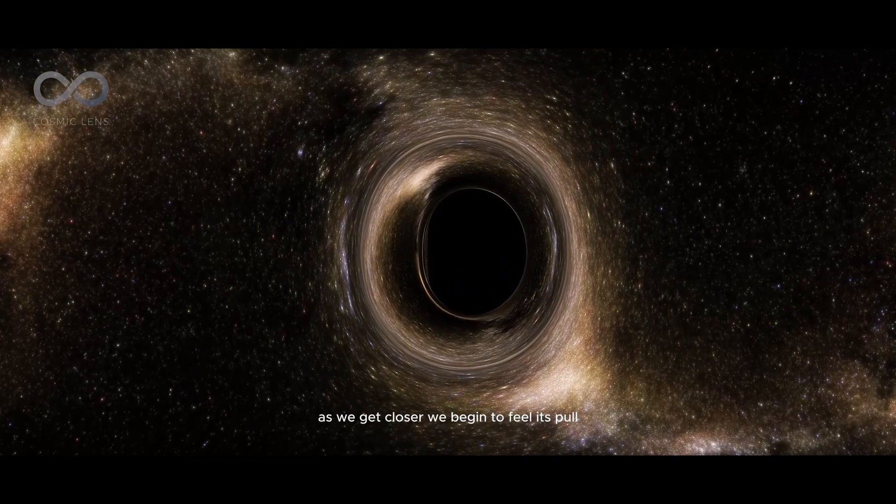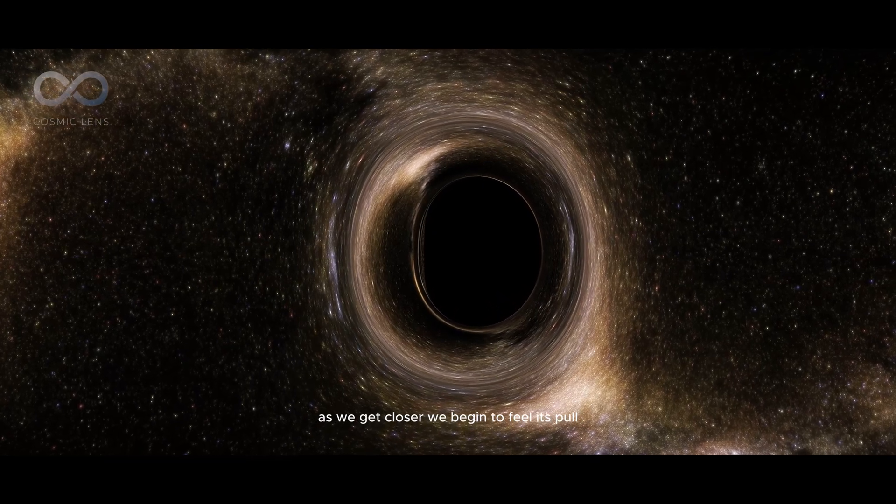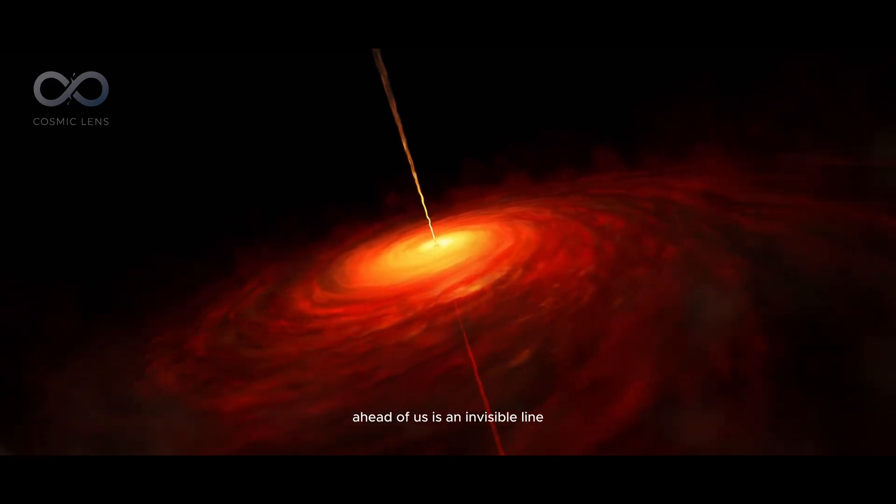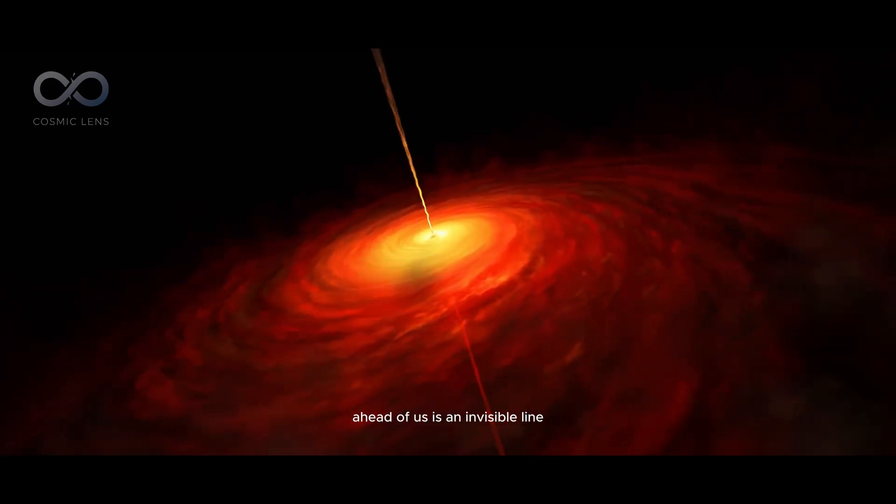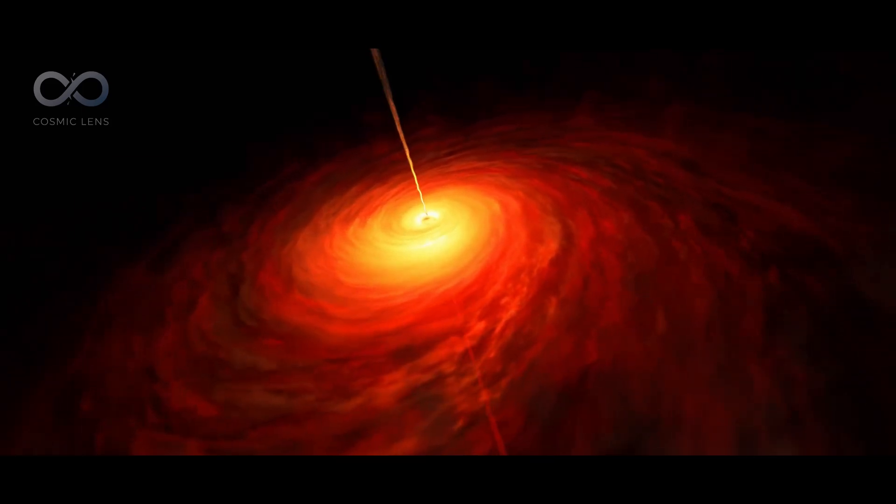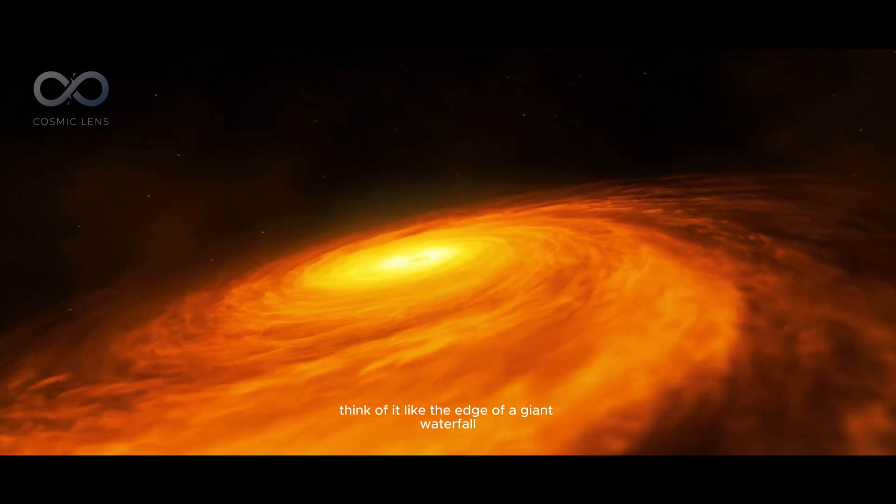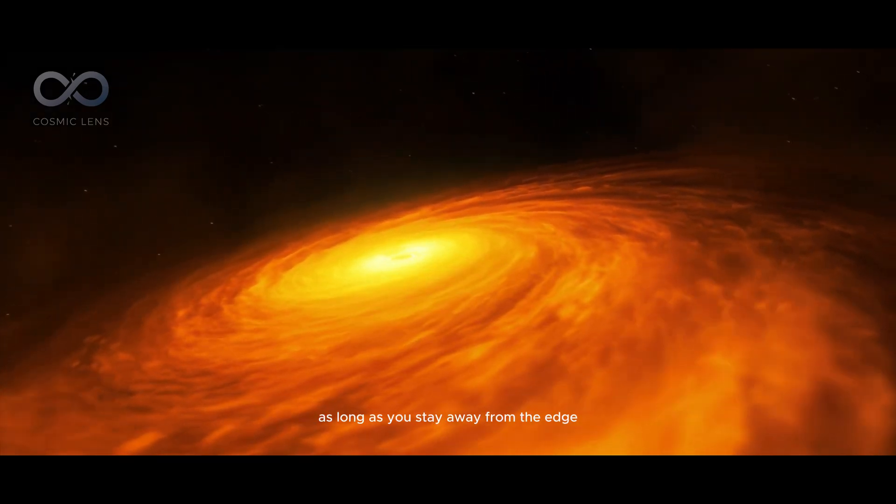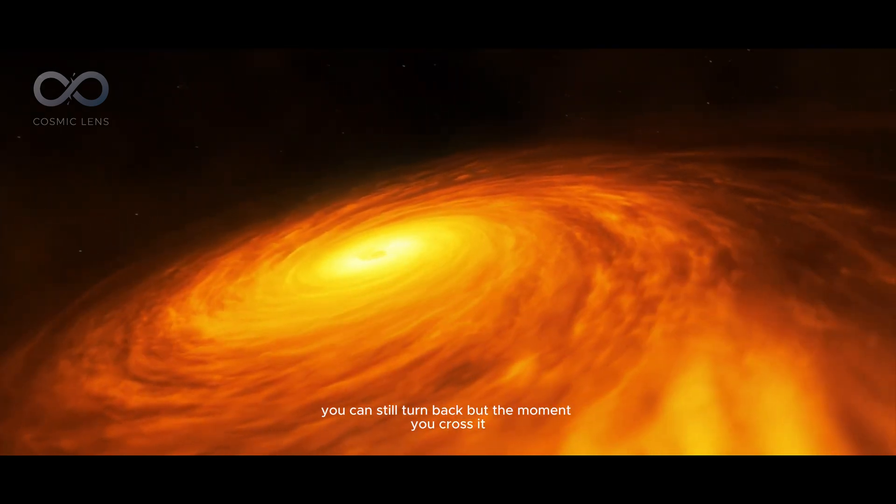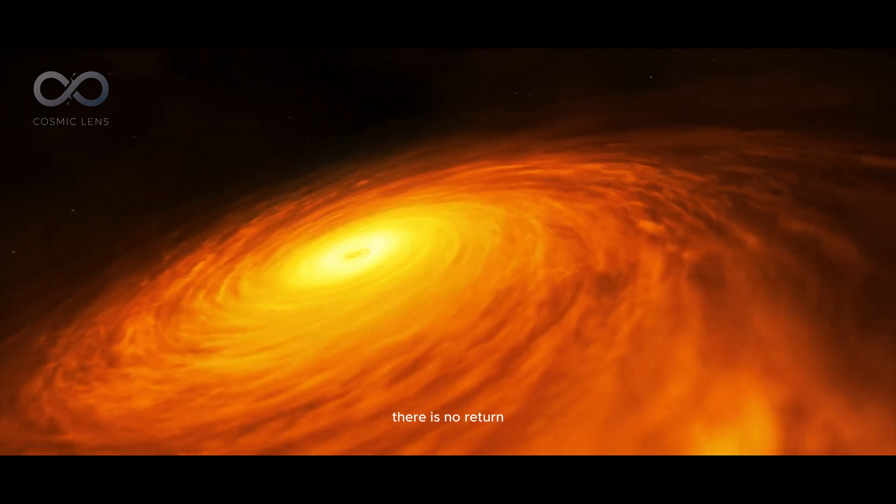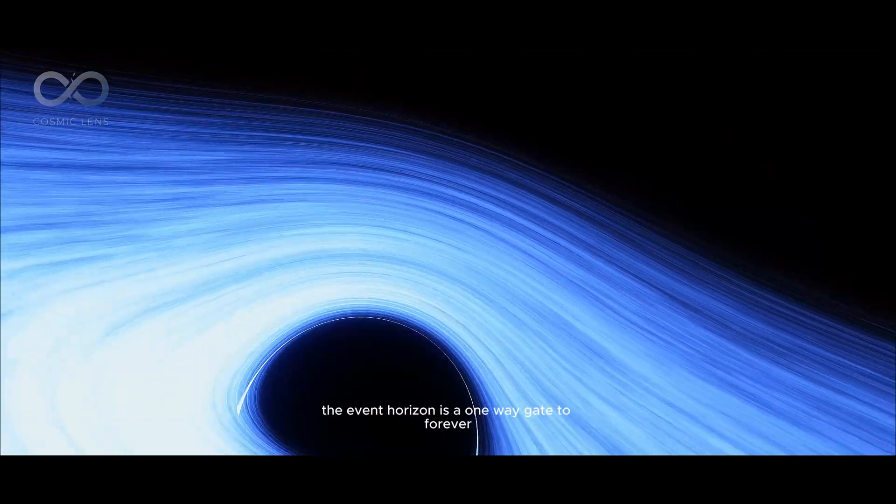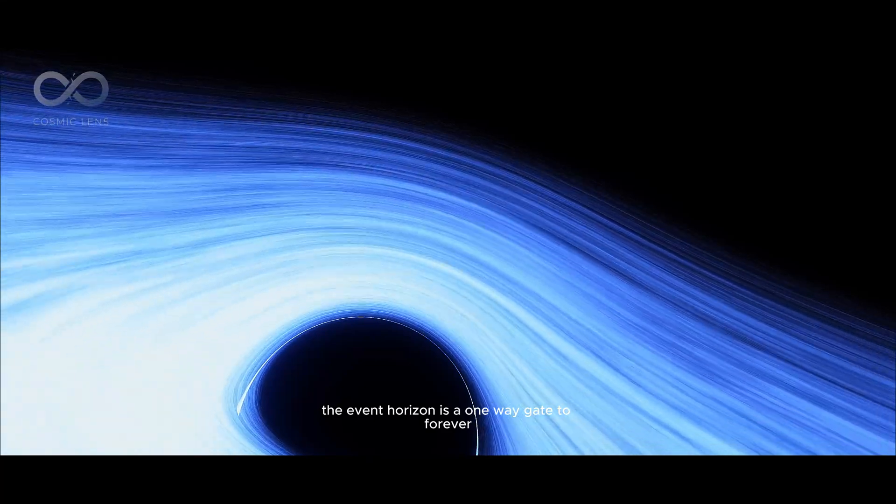As we get closer, we begin to feel its pull. A pull we cannot resist. Ahead of us is an invisible line. Scientists call it the event horizon. Think of it like the edge of a giant waterfall. As long as you stay away from the edge, you can still turn back. But the moment you cross it, there is no return. The event horizon is a one-way gate to forever.